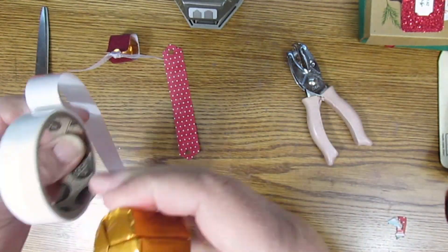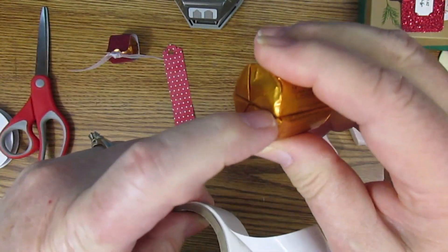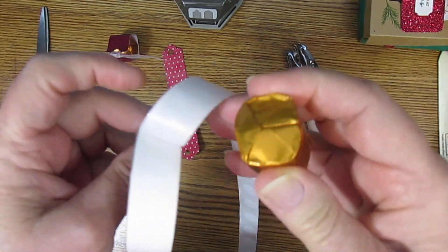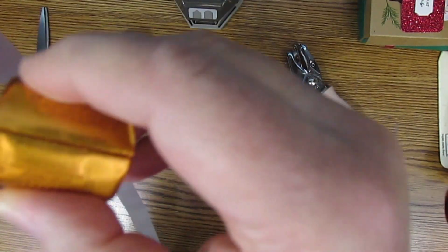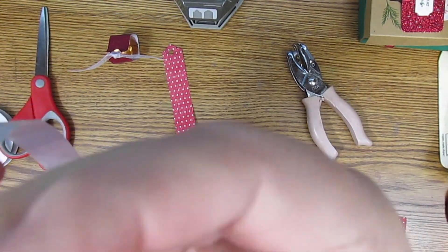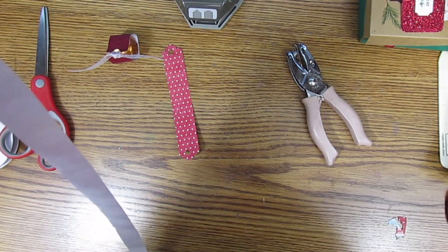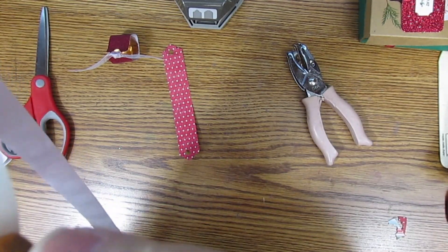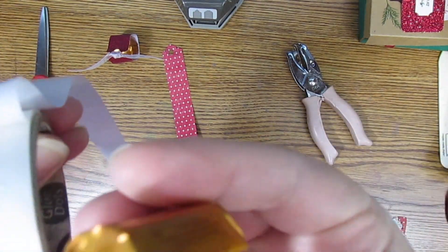Then we'll put glue dots on right along the place where they meet. Let me see that one didn't stick. There we go.